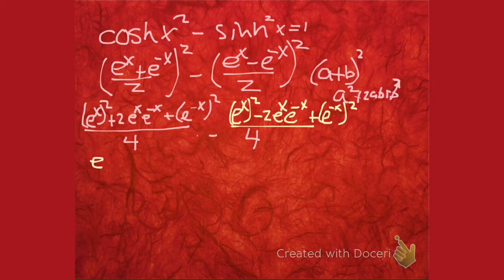So that's e to the 2x because that's what e to the x squared is. Whoa, whoa there. If I have e to the x times e to the minus x, I have the same base and I'm multiplying. So I add their exponents. So I have e to the 0 which is 1. So 1 times 2 is 2. And then this is e to the minus 2x.